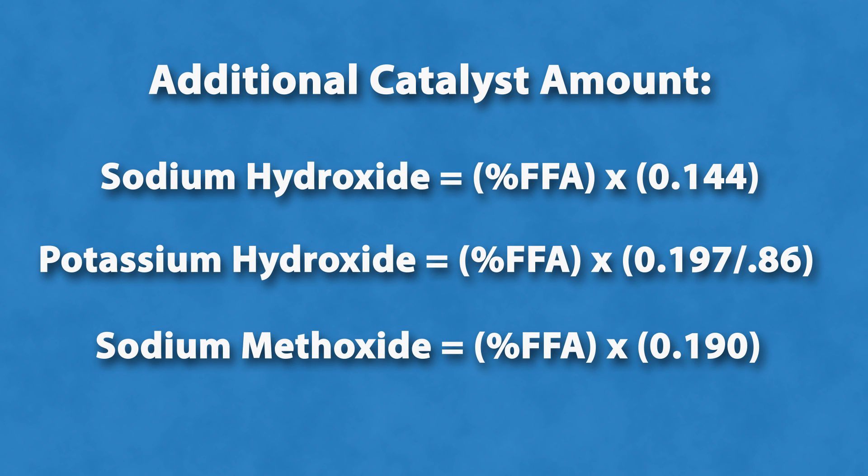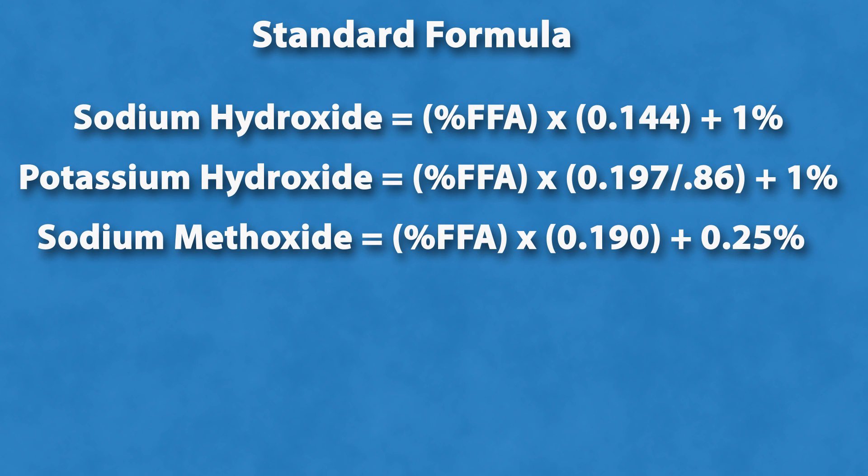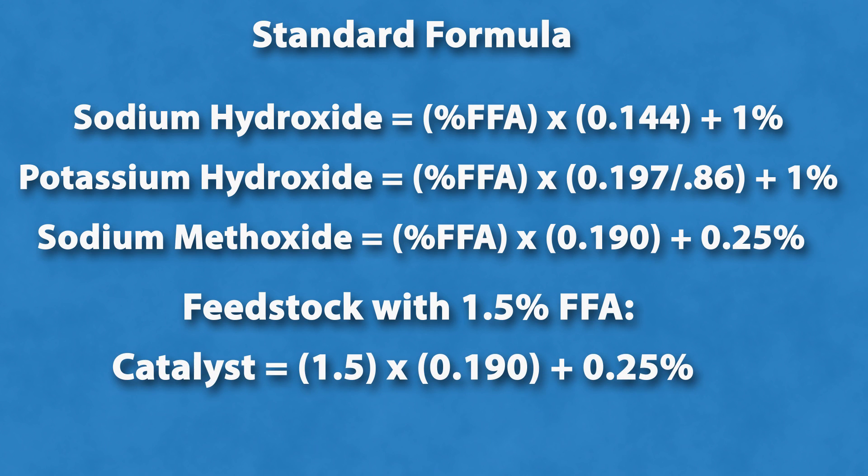This figure is the amount of catalyst that should be added to standard formula, which is based on the feedstock weight as follows. For example, when adding sodium methoxide, a feedstock with 1.5% free fatty acid, the amount of catalyst would be 1.5 times 0.190 plus 0.25%, equaling 0.54% of the weight of oil or fat to be made into biodiesel.